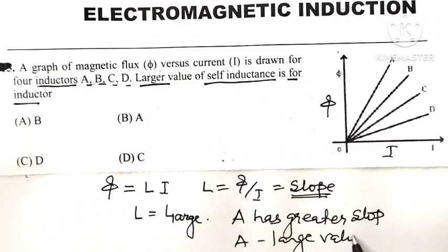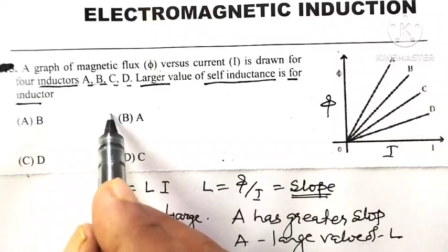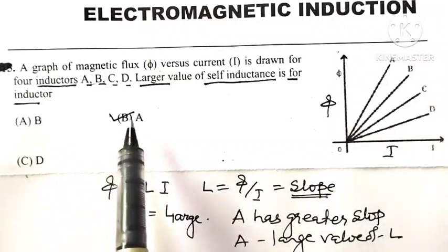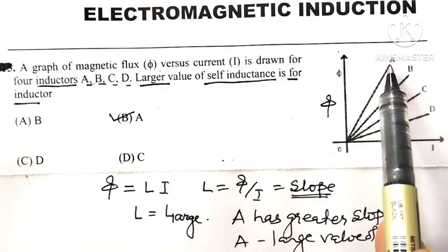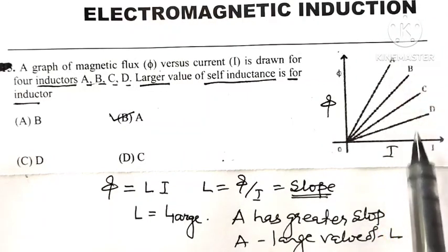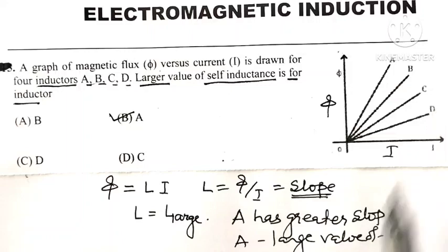Inductor A has large value of self-inductance L. So here B is the correct option, that inductor A has large value of L because slope corresponding to inductor A is large as compared to B, C, and D.